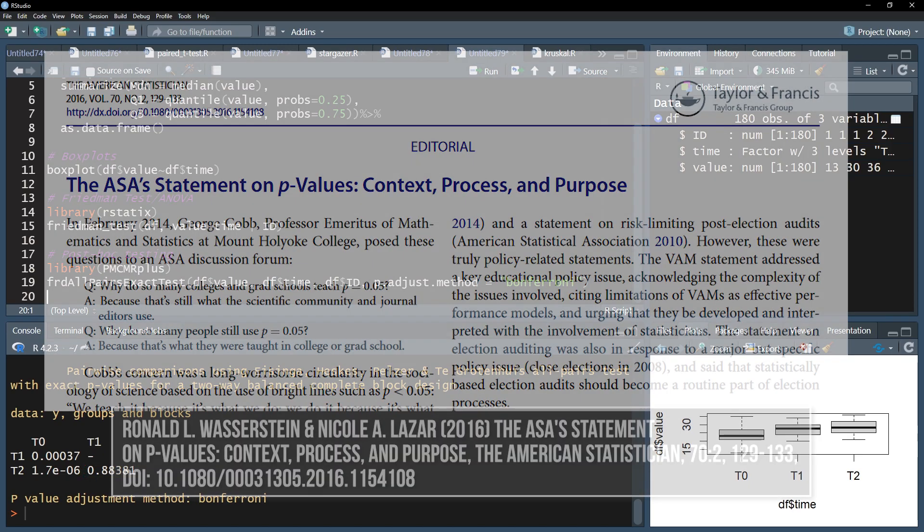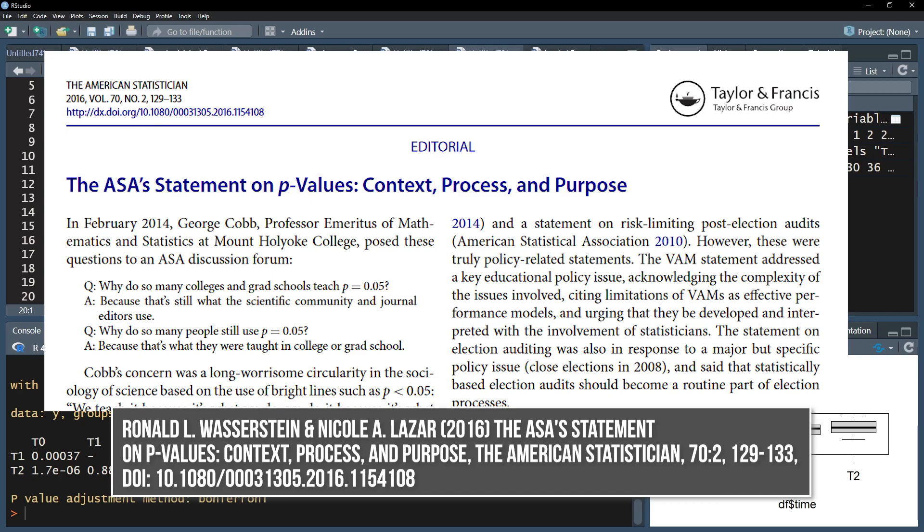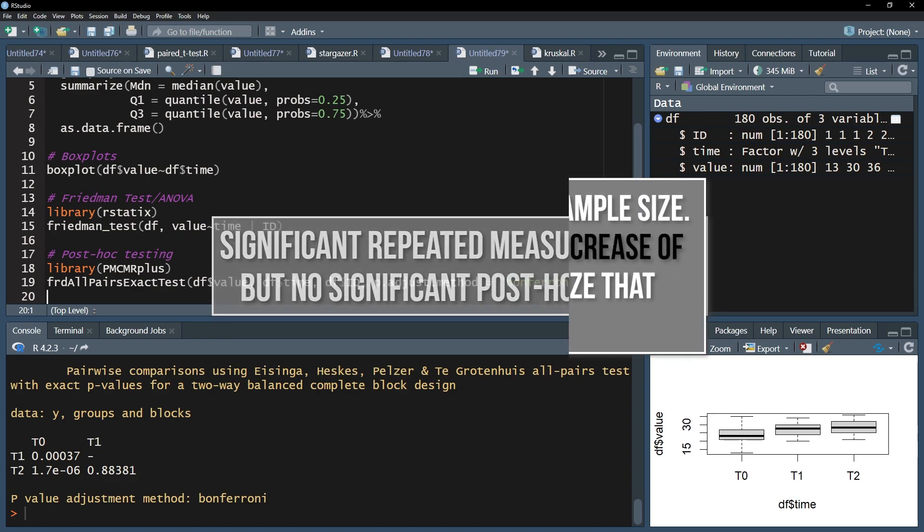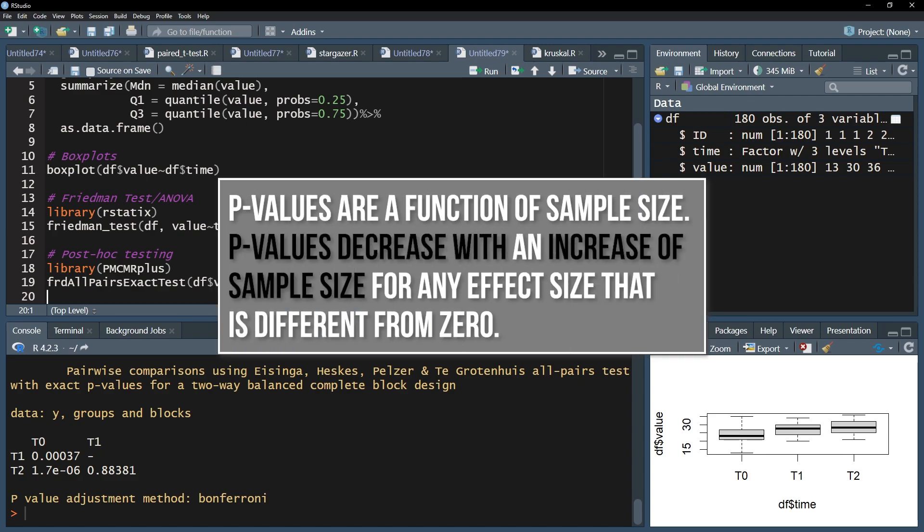Please also consult the paper The ASA Statement on p-values and draw your own conclusions about dichotomizing decisions based solely on the p-value compared to the alpha level. Finally, you might have a significant Friedman test and no low enough p-values in post-hoc testing when controlling for alpha error inflation. That is not a contradiction and the internet is full of discussions about this phenomenon of significant tests and non-significant post-hoc tests.